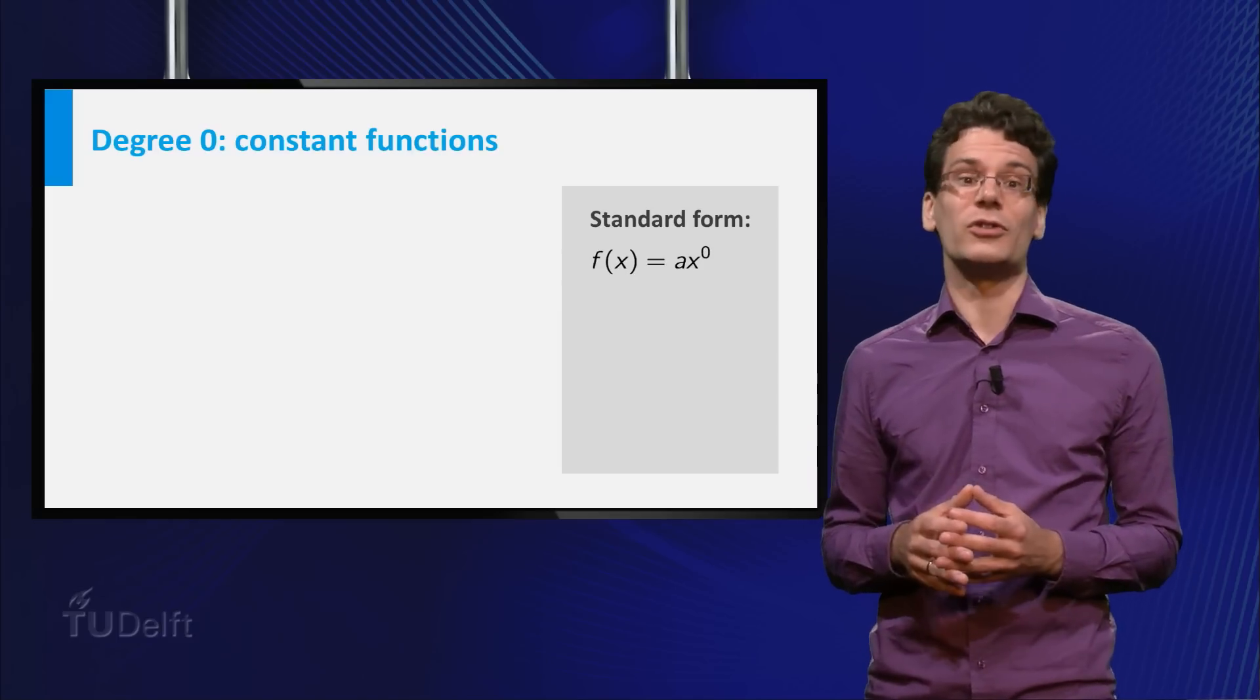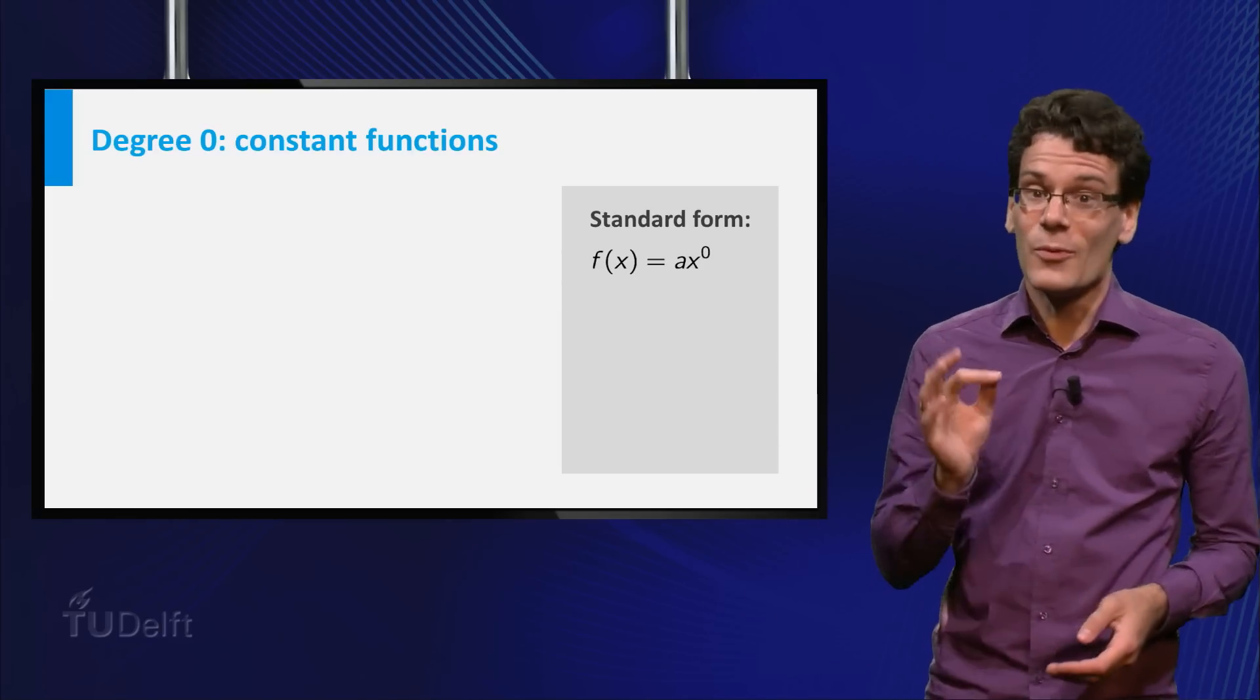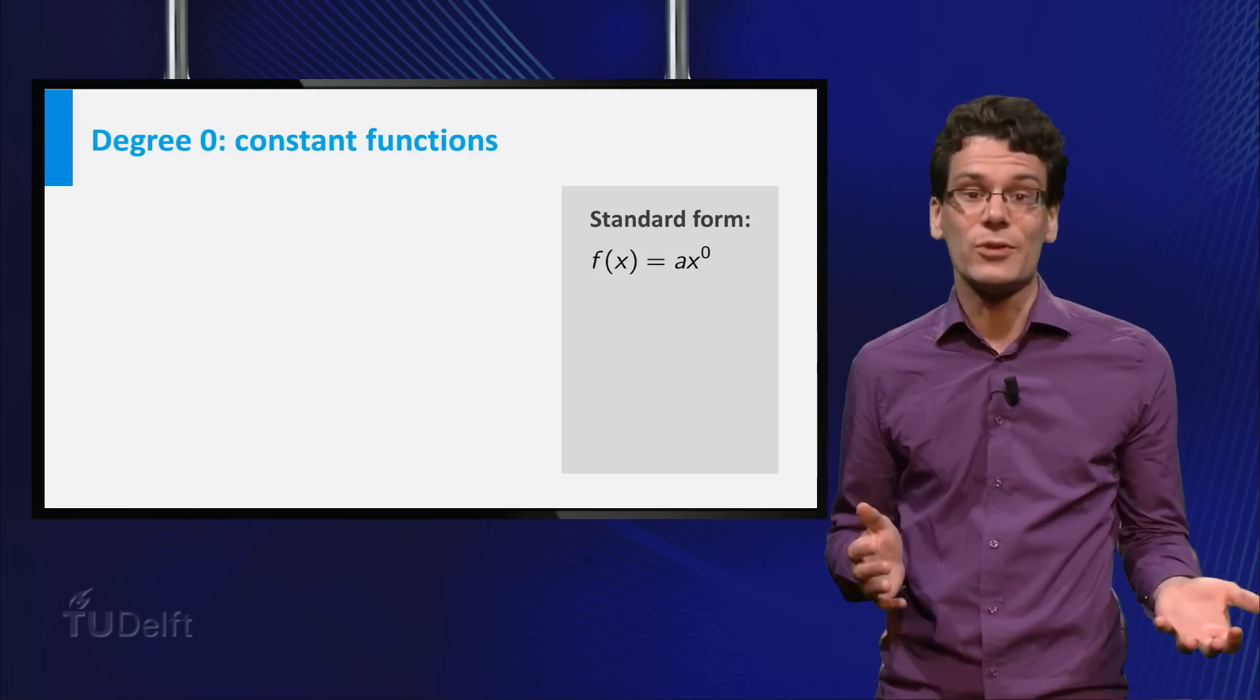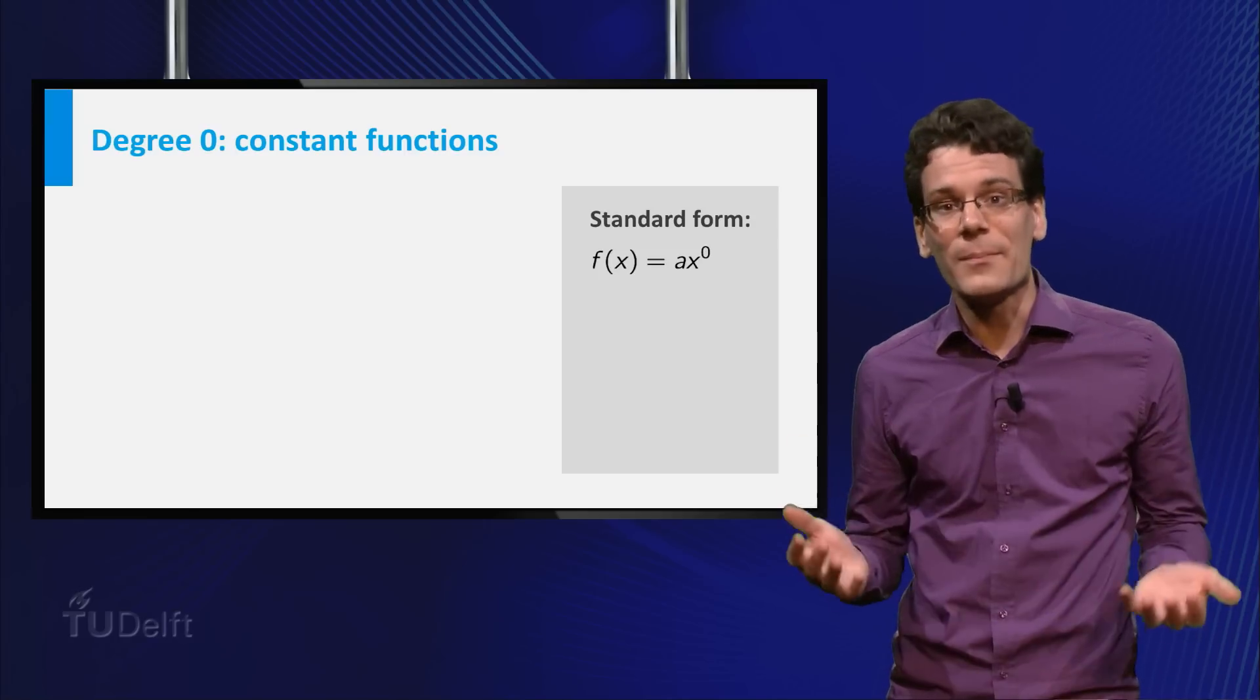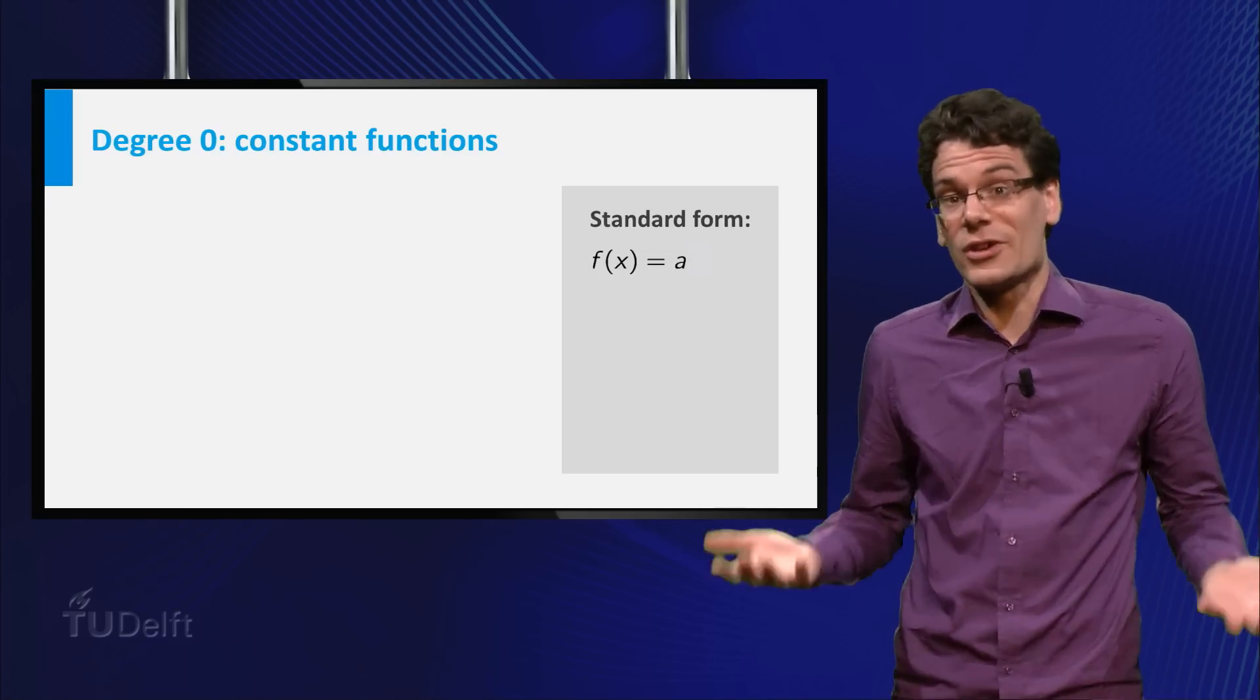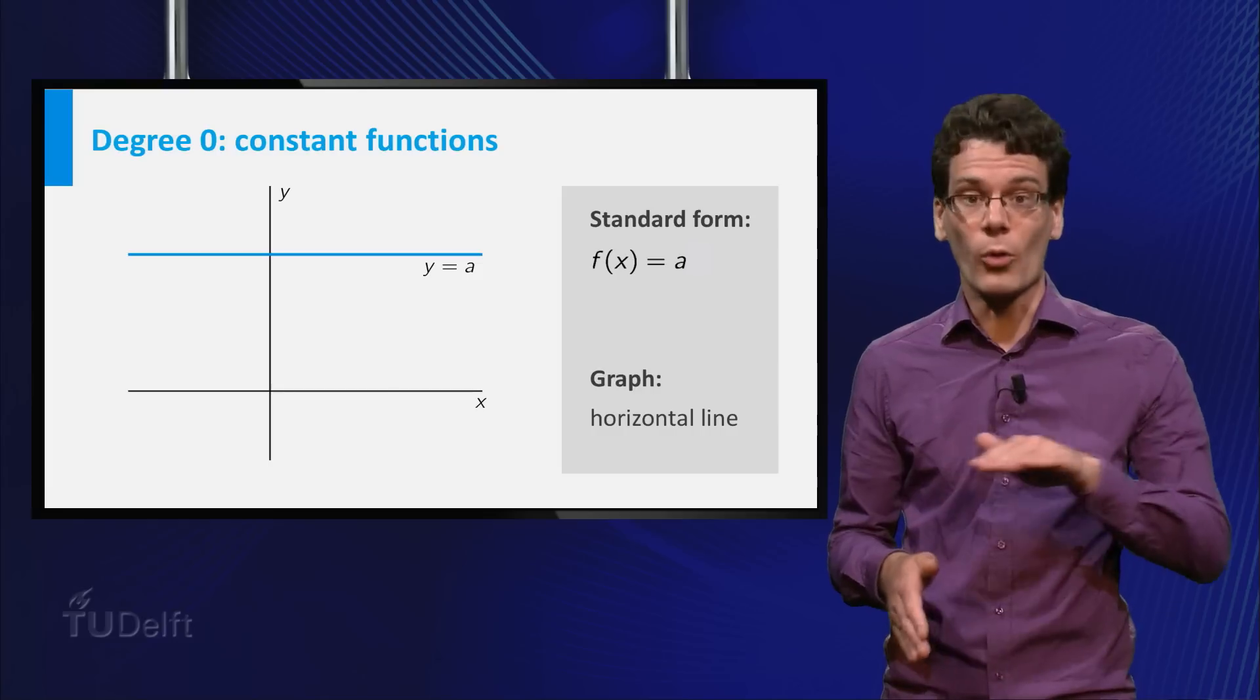The easiest non-zero polynomial functions are those of degree 0. Is that possible? Yes, we can write these functions as f(x) equals a times x to the power 0. Now remember that x to the power 0 is equal to 1, so these are just constant functions. The graphs of these functions are simply horizontal lines.